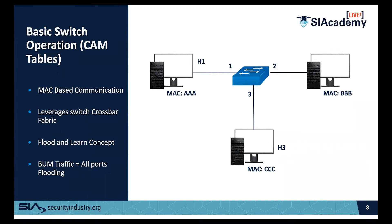H1 computer has a MAC address of AAA, H2 has an address of BBB, and H3 has a MAC address of CCC. These are simplified for this example to make it easier to digest. When computers first started doing networks, everything was based on something called CSMA/CD — carrier sensing multiple access with collision detection.